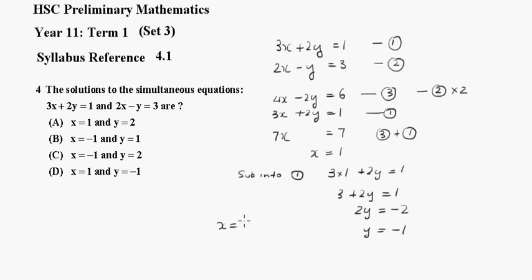So x = 1 and y = -1. Looking across here to find those, that's option D.